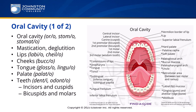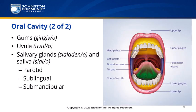The term uvula comes from the Latin meaning little grape — it hangs from the back of the soft palate. There are three salivary glands, each named for its location. The parotid gland is near the ear — par means near, oto means ear. The sublingual gland is under the tongue — sub means under, linguo means tongue. The submandibular gland is under the lower jawbone — mandibulo is our word part for lower jawbone.